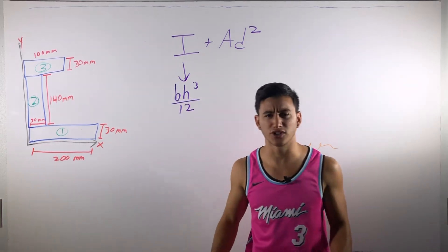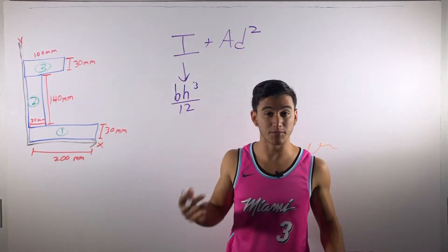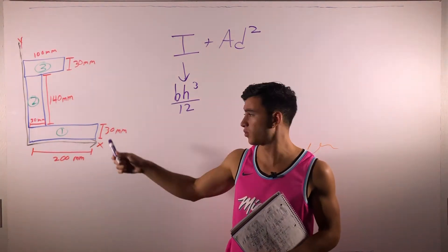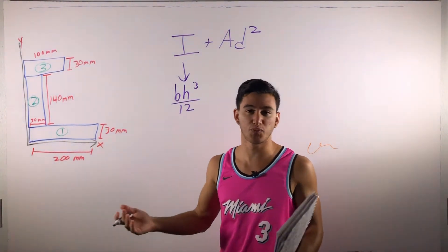Usually in the exam or the final, your teacher will give you what the I is going to be. If it's a circle, it's different, that kind of thing. But it's important to know this one because you work with a lot of rectangles and it's just pretty easy to remember.